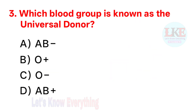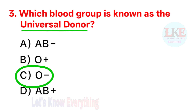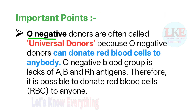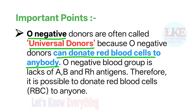Question number 3, very important question: which blood group is known as the universal donor? Right answer option C: O negative. O negative donors are often called universal donors because O negative donors can donate red blood cells to anybody. O negative blood group lacks AB and RH antigens. Therefore, it is possible to donate red blood cells (RBC) to anyone.